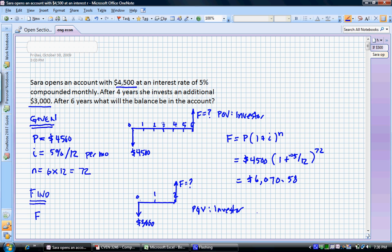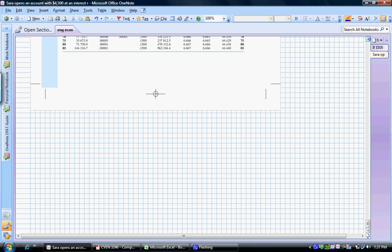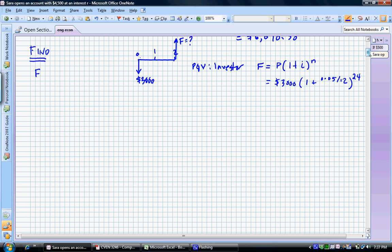Let's find the future value of the second investment. F is going to equal P times (1 plus i) to the n. We're going to replace that with our $3,000 investment multiplied by (1 plus 0.05 over 12), and then we're going to raise that to an n of 24 because we're going to look at two years times 12 which gives us 24. That equals $3,314.82 for that portion of the investment.